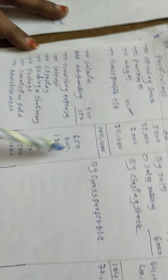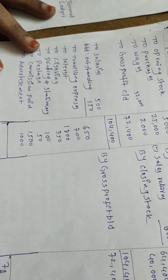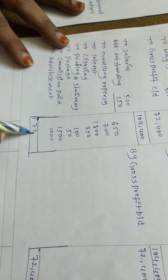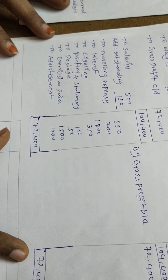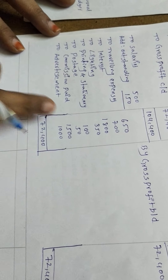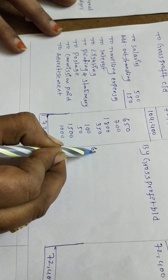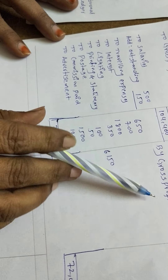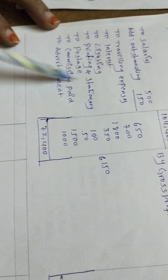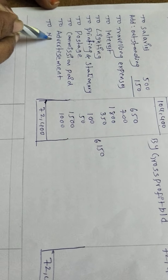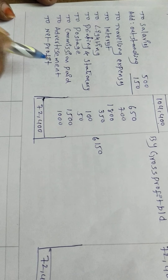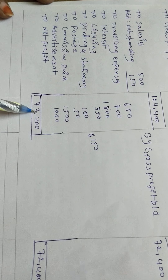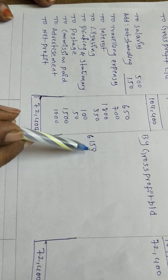Now balance both sides. Compared to the debit side, credit side has more balance. We record 72,400 on both sides. Credit side has 72,400 and debit side total is 6,150.